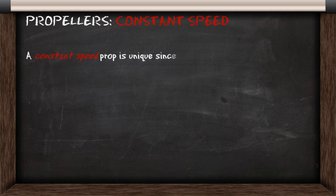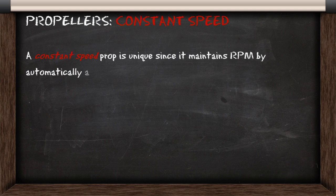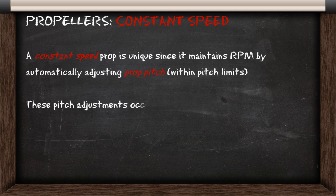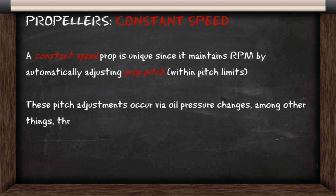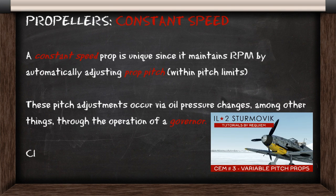A constant speed propeller is unique since it maintains RPM by automatically adjusting propeller pitch. These pitch adjustments occur via oil pressure changes, among other things, through a device called the governor.